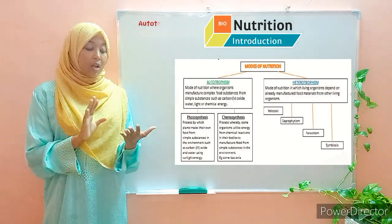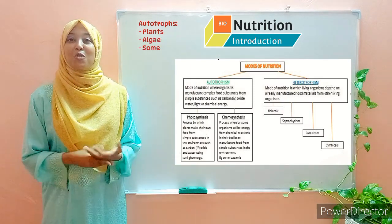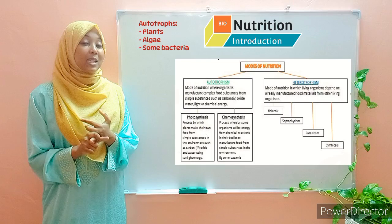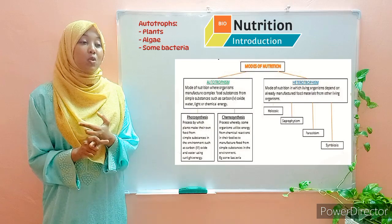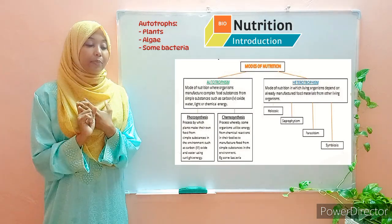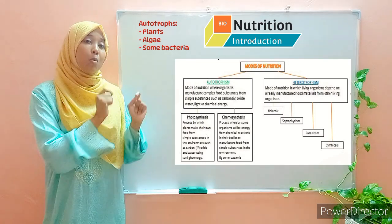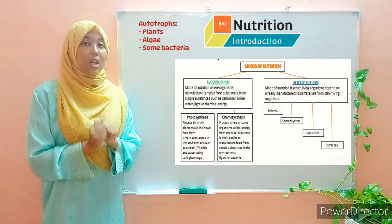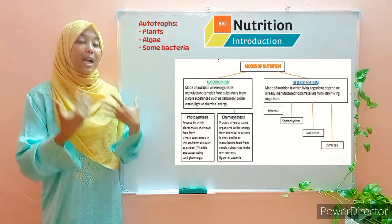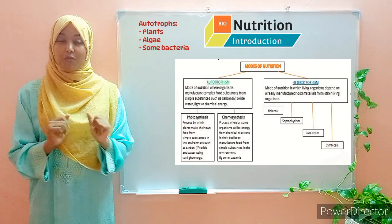Examples of autotrophs include plants, some bacteria, and algae. Algae are a group of organisms that belong to kingdom Protoctista. These three broad categories include organisms that have the ability to manufacture their own food — autotrophs.